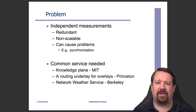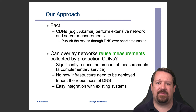If everyone offering an overlay service does their own measurements, that can be very redundant and non-scalable. It would be nice if there was a common service that performed these measurements once and allowed all overlay networks to use them. So the question is: given that the results of Akamai's measurements are published to some level of granularity through the public DNS database, can other overlay networks reuse these measurements in providing their own overlay service? This would reduce the amount of redundant measurements performed over the internet.